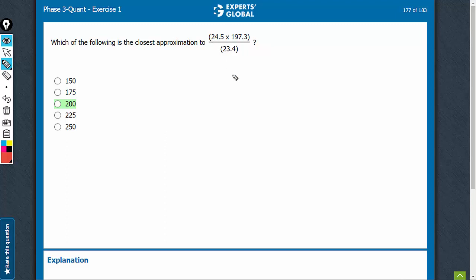23.4 has to become 24.5. The difference is 1.1 on a base of 23.4. That is approximately a 5% increase.